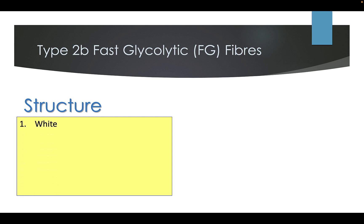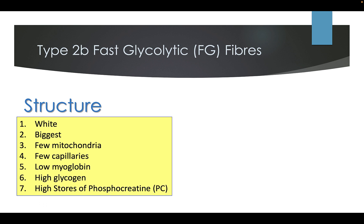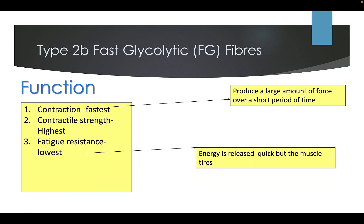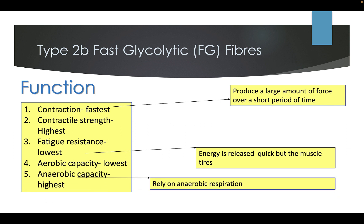The structure of Type 2B fast glycolytic fibres: they are white and the biggest. They have few mitochondria, few capillaries, low myoglobin, high glycogen, and high stores of phosphocreatine. Their functions: they contract the fastest out of the three, with the highest contractile strength. Their fatigue resistance is the lowest — energy is released in a quick burst but the muscle tires very quickly. Their aerobic capacity is the lowest as they don't work with oxygen, but their anaerobic capacity is the highest as they rely on anaerobic respiration.